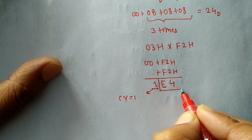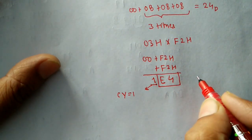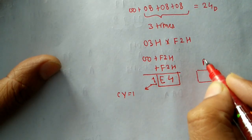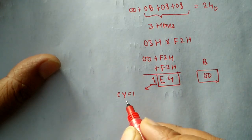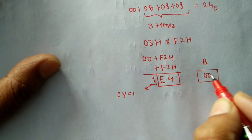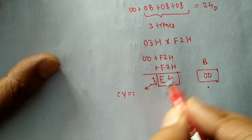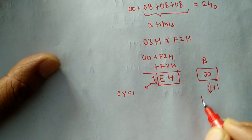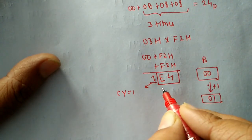We will take a separate register — register B — and put 00h there, checking the carry. If carry is generated, we increment register B; otherwise we don't. In this case carry is generated, so we increment B to 01h. Then we add F2h again.